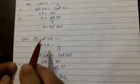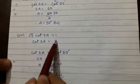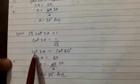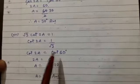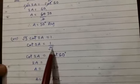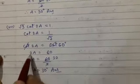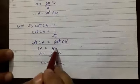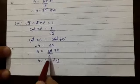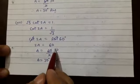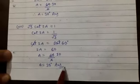Now, the next part: √3 cos 2A = 1, it is given. So cos 2A = 1/√3. In place of 1/√3 we write cos 60°, because the value of cos 60° is 1/√3. So cos cancels out, 2A = 60°, therefore A = 60/2 = 30°. So A = 30°, this is your answer.